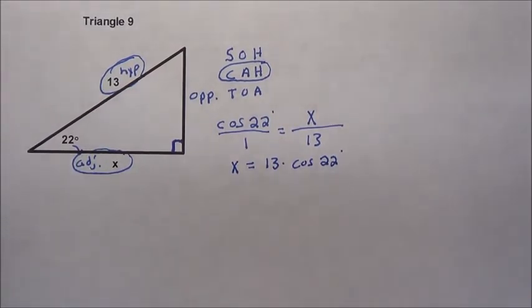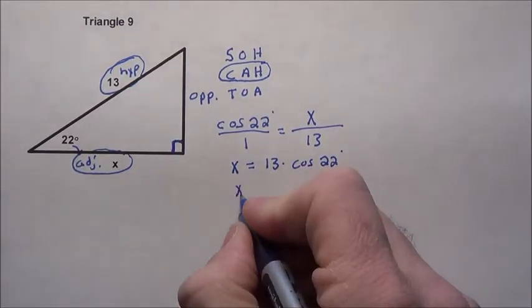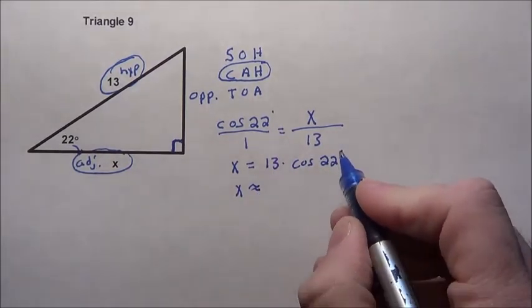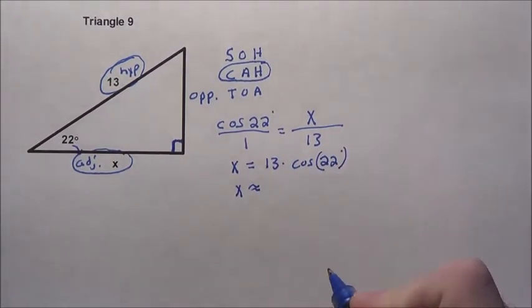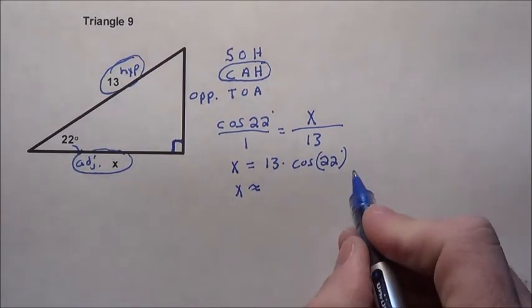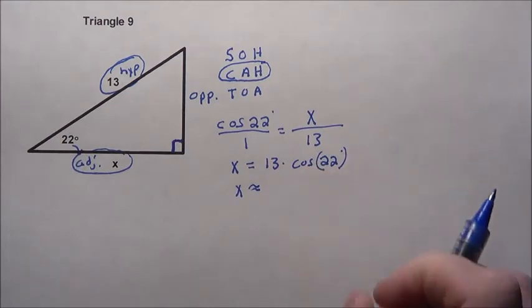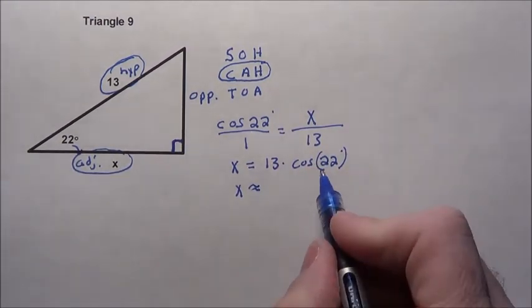I grab my calculator and make sure it's in degree mode. I do 13 times the cosine of 22 degrees. Put that in parentheses to be careful, because otherwise it's going to do cosine of that big number. You don't want that.